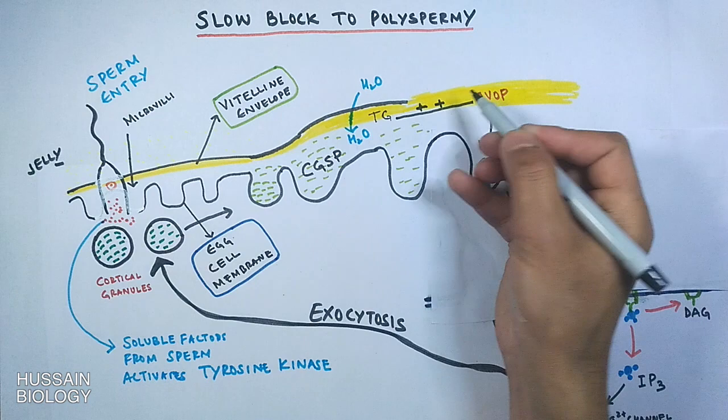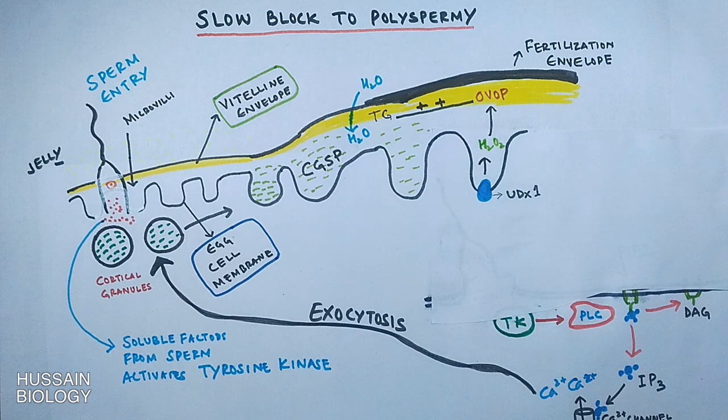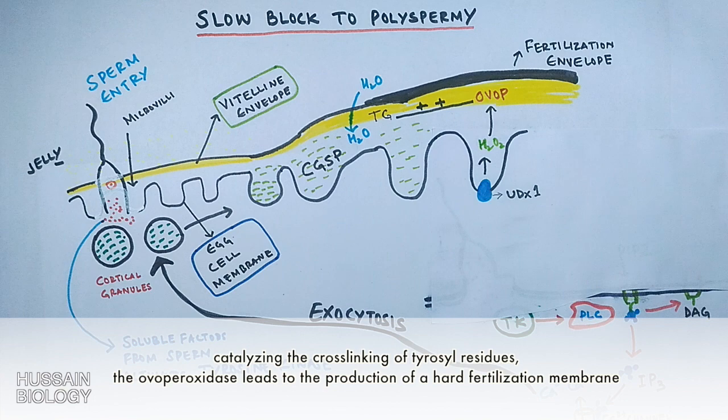Transglutaminase and ovoperoxidase together crosslink the proteins and form the fertilization envelope. Ovoperoxidase also interacts with ovoperoxidase-binding proteins, effectively tethering ovoperoxidase to the vitelline layer. In the presence of H2O2 generated by an egg oxidase, ovoperoxidase catalyzes the formation of covalent dityrosine bonds between proteins, which hardens the fertilization envelope, ensuring no additional sperm can enter the egg.